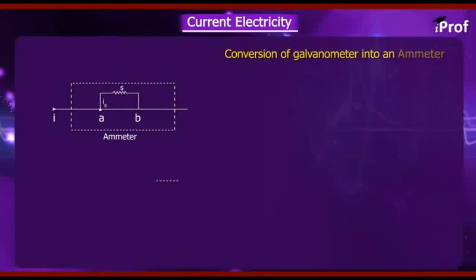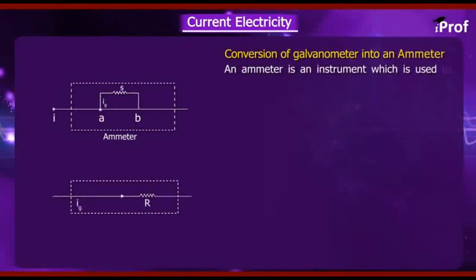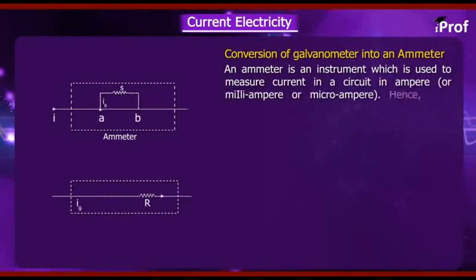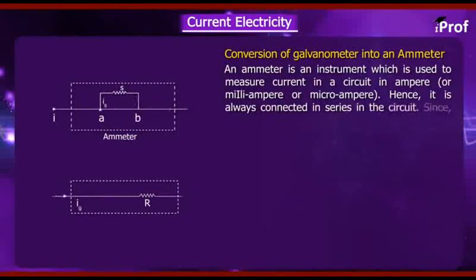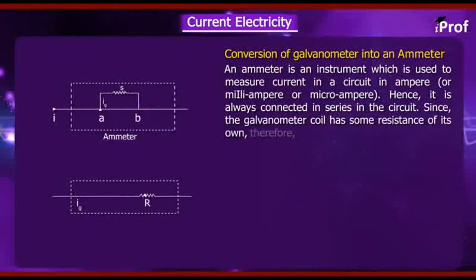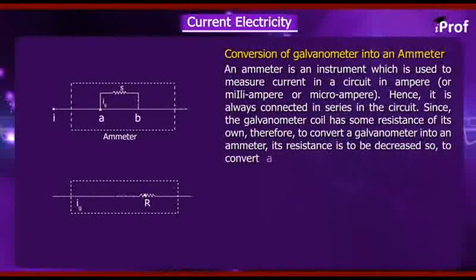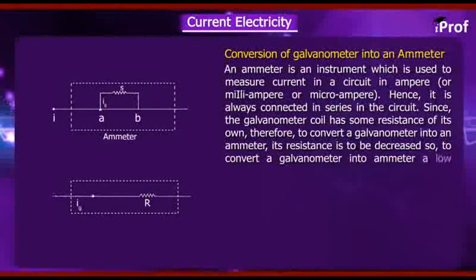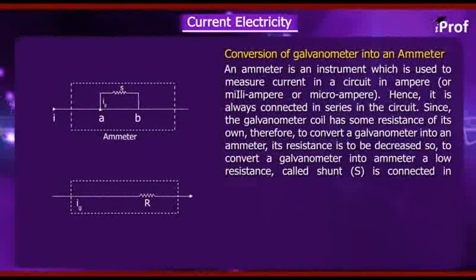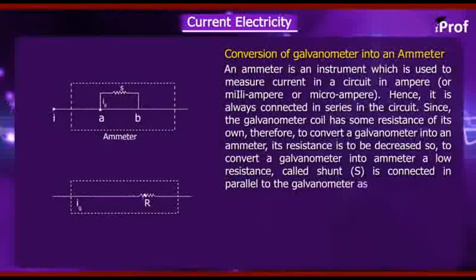Conversion of galvanometer into an ammeter - an ammeter is an instrument which is used to measure current in a circuit in ampere or milliampere or microampere. Hence, it is always connected in series in the circuit. Since the galvanometer coil has some resistance of its own, therefore, to convert a galvanometer into an ammeter, its resistance is to be decreased.